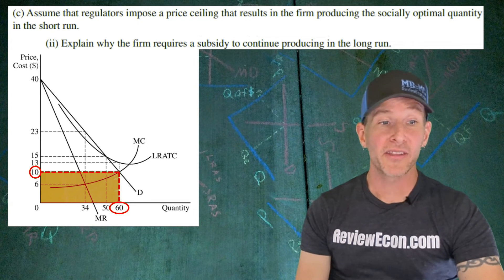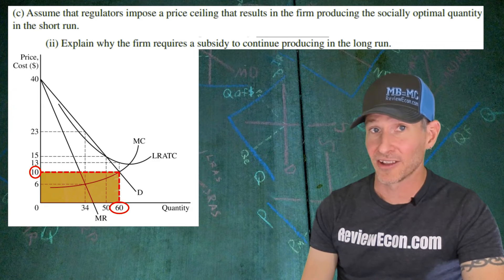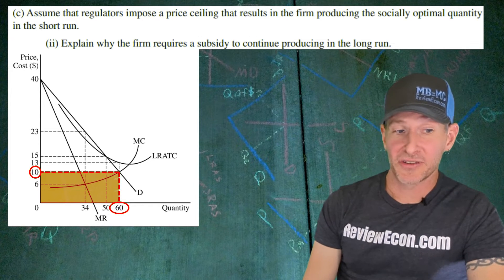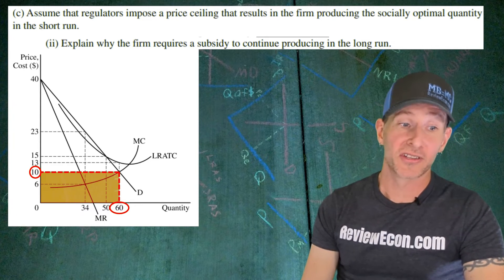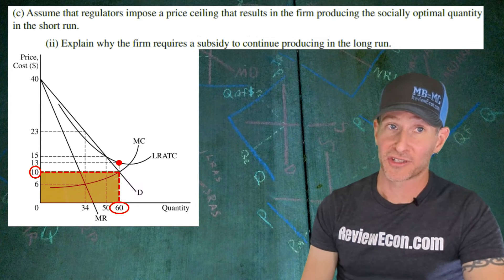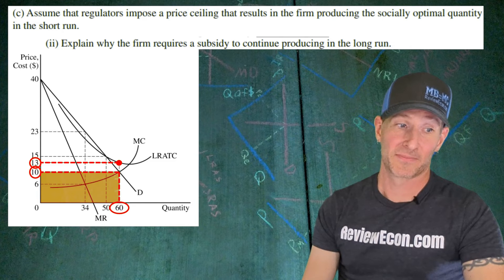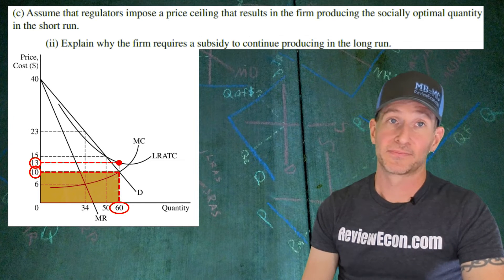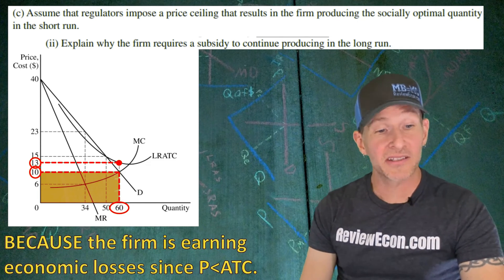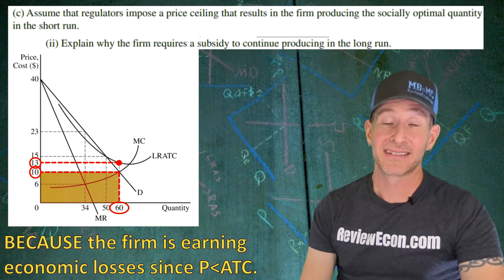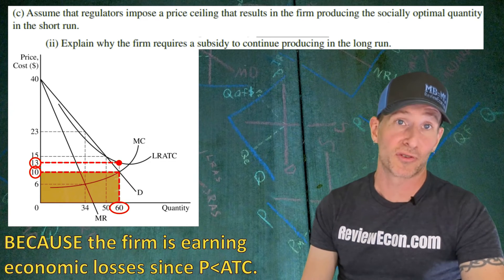For part C-II, we're going to explain why the firm requires a subsidy to produce this quantity in the long run. You'll notice that at 60 units, the price is $10, but the average total cost curve is higher. That average total cost is $13. That means the firm is suffering economic losses. So the answer here is because the firm is earning economic losses, since price is less than average total cost.